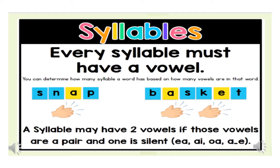A syllable may have two vowels if those vowels are a pair and one is silent, like EA, AI, OA, AE. In between it is going to be a consonant. Do you know what consonant is? Except the A, E, I, O, U, the rest of the letters will be counted as consonants.